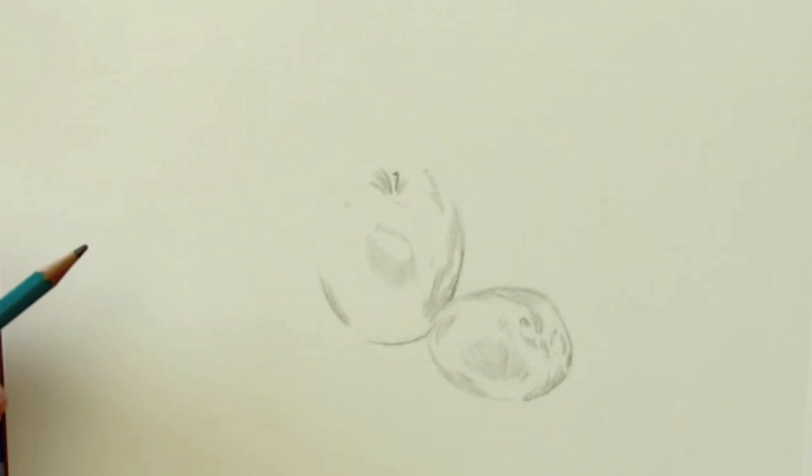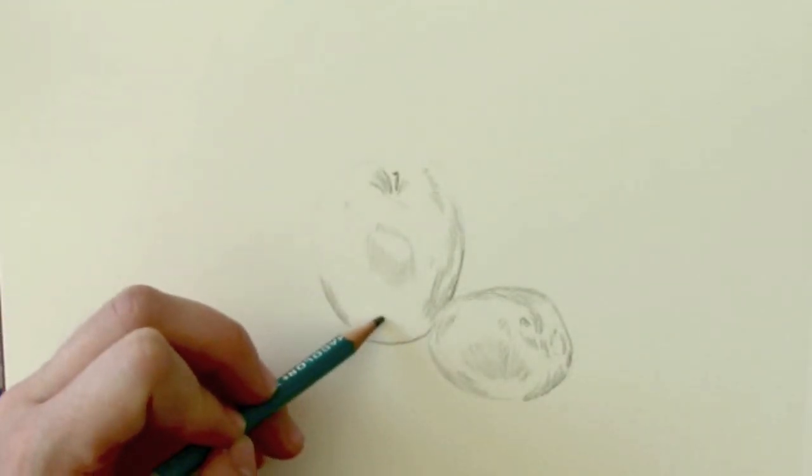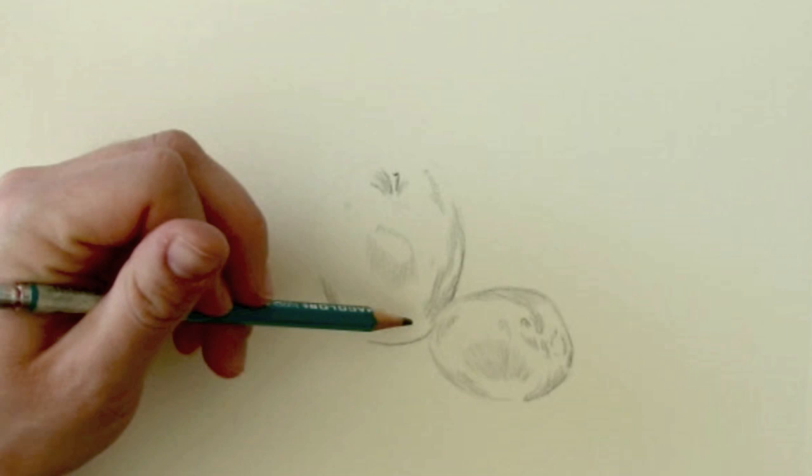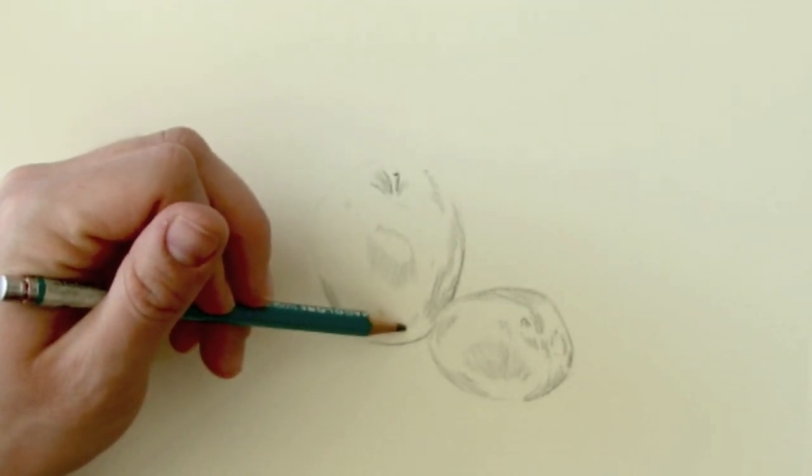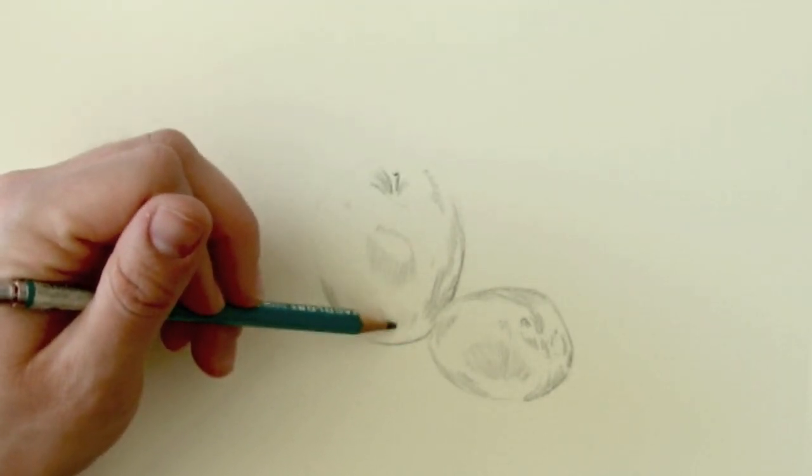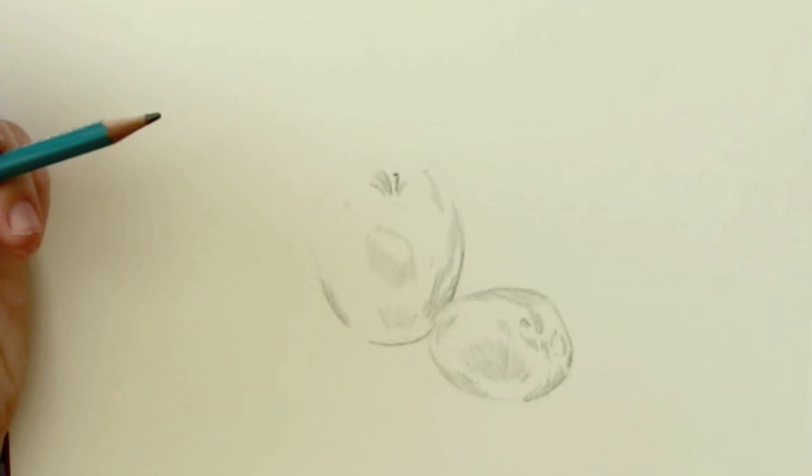Now we've just outlined some of the basic shadows in our apple and in our tomato. I feel like I missed some but we can always go back in as we add more value. Next we're going to anchor these to the table by doing our shadows.